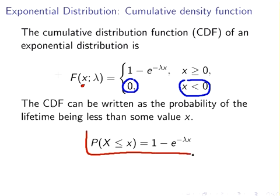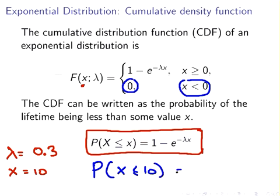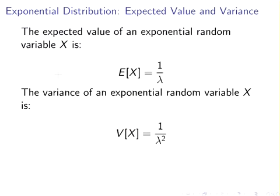This second equation is a bit easier to work with for pen and paper calculations, so this is the one to remember. It is not always given in exam papers because it is quite easy to remember. For example, suppose lambda is 0.3 and X equals 10: the probability of X less than or equal to 10 equals 1 minus e to the minus three, which you can work out on a calculator.